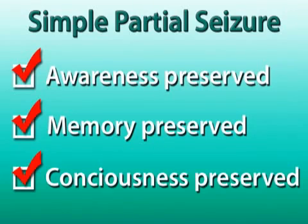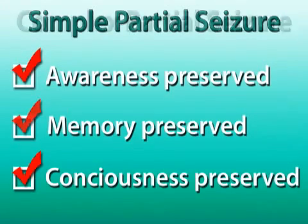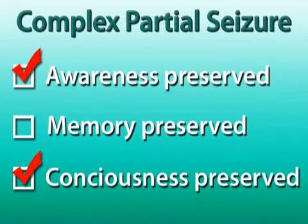This type of seizure is called a complex partial seizure. It is the most common type of seizure in adults. In general, when awareness, memory, and consciousness are preserved during the seizure, then the seizure is called simple partial. However, if any are impaired, then the seizure is called complex partial.